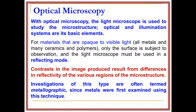Optical and illumination systems are its basic elements. This is a major difference compared to the biological microscope. For materials that are opaque to visible light — all metals and many ceramics and polymers — only the surface is subjected to observation, and the light microscope must be used in the reflecting mode. Contrast in the image results from differences in the reflectivity of various regions of the microstructure depending on your etching.